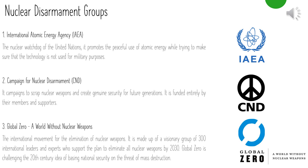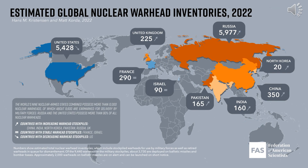Global Zero is the international movement for the elimination of nuclear weapons, made up of 300 international leaders and experts who support a plan to eliminate all nuclear weapons by 2030. It is challenging the 20th century idea of basing national security on the threat of mass destruction. A graphic showing an estimation of global nuclear weapons clearly suggests that the United States and Russia are the leading nuclear powers in the world today.